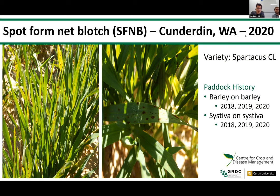The paddock history there is actually very similar — barley at least since 2018, and Systema since 2018 as well. In many of the areas, high salinity is a problem and barley seems like a good choice, but if we are losing the capacity to rotate crops and not putting enough attention into rotating the chemicals, we're going to end up with exactly the same situation.